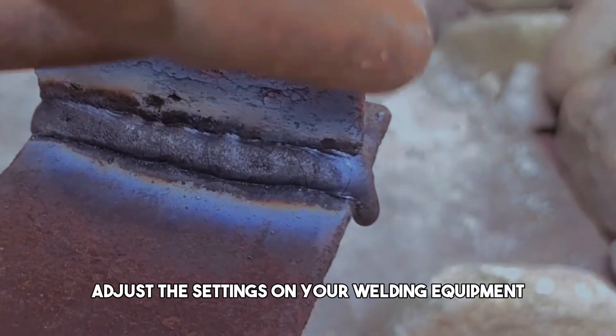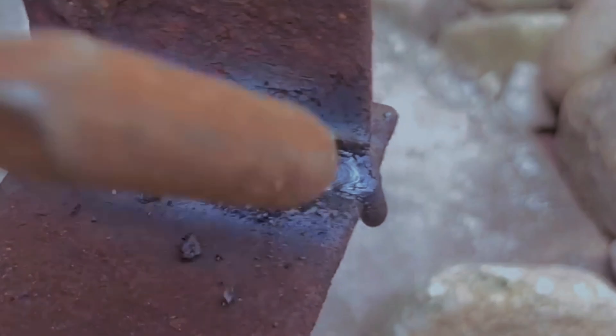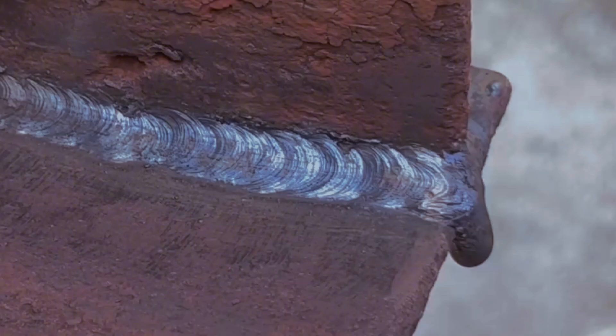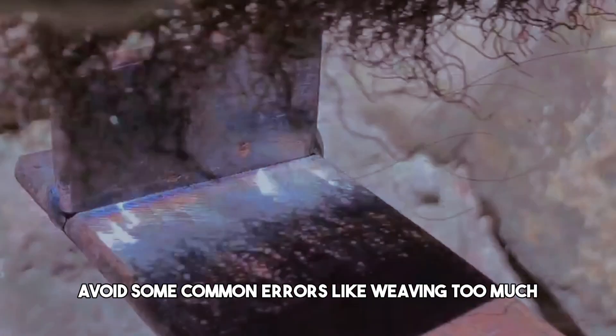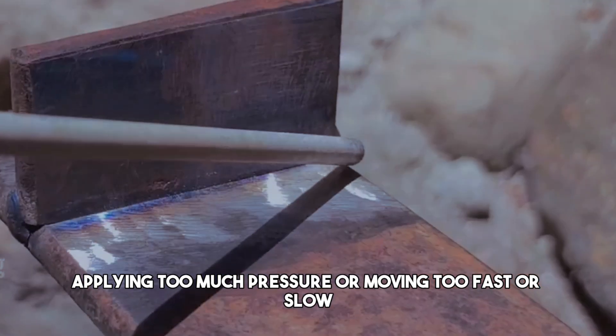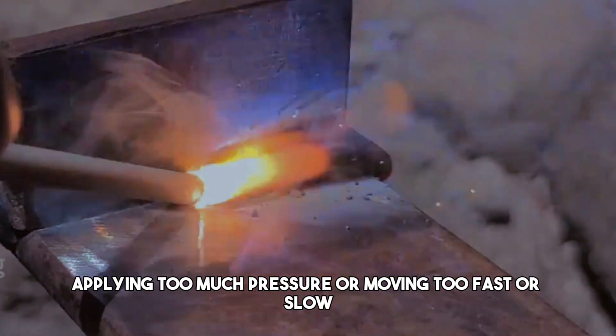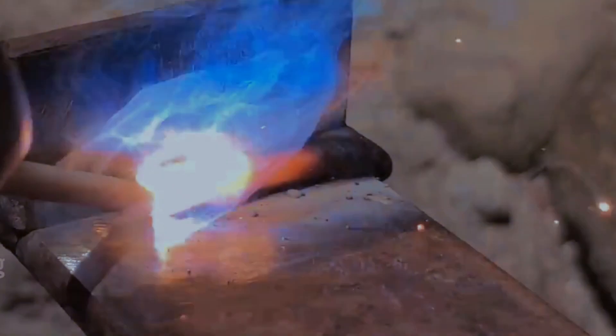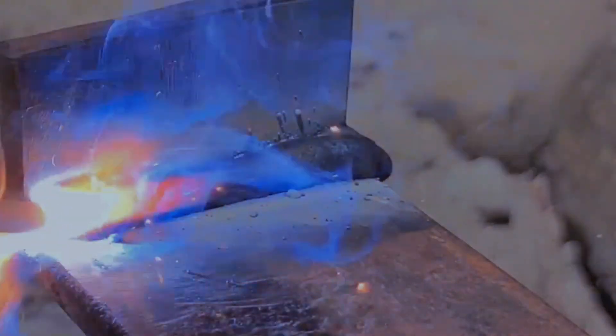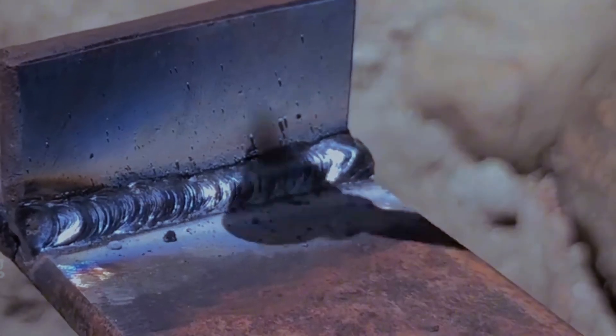Adjust the settings on your welding equipment, such as the voltage, amperage, gas flow, and wire feed to match your welding conditions. Avoid some common errors like weaving too much, applying too much pressure, or moving too fast or slow. By using the correct techniques and paying attention to your welding actions, you can improve the quality of your welds significantly.